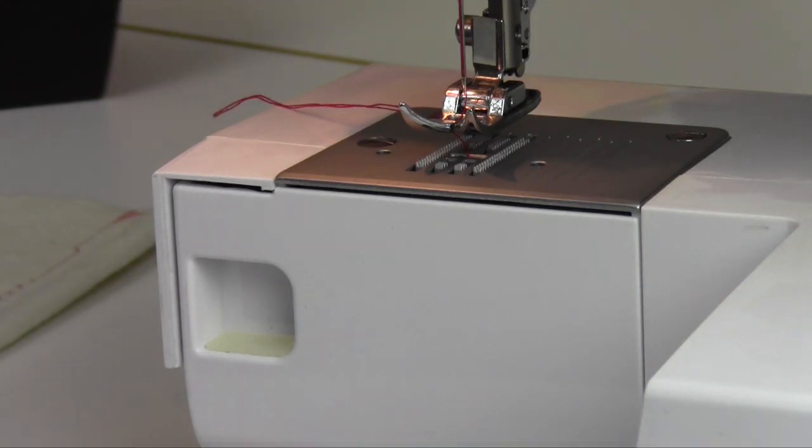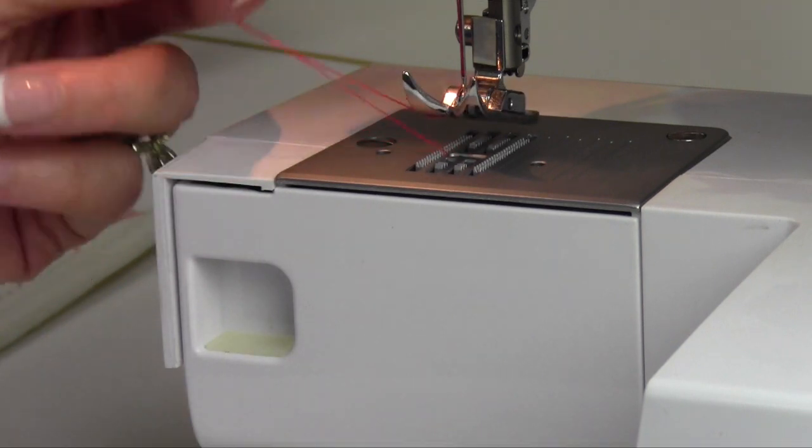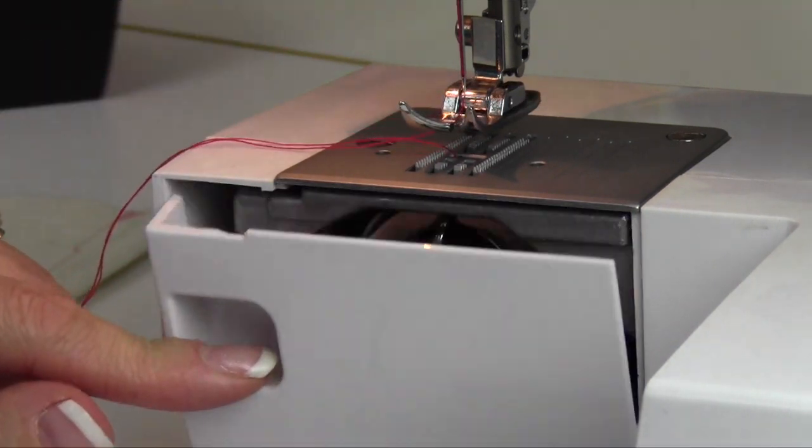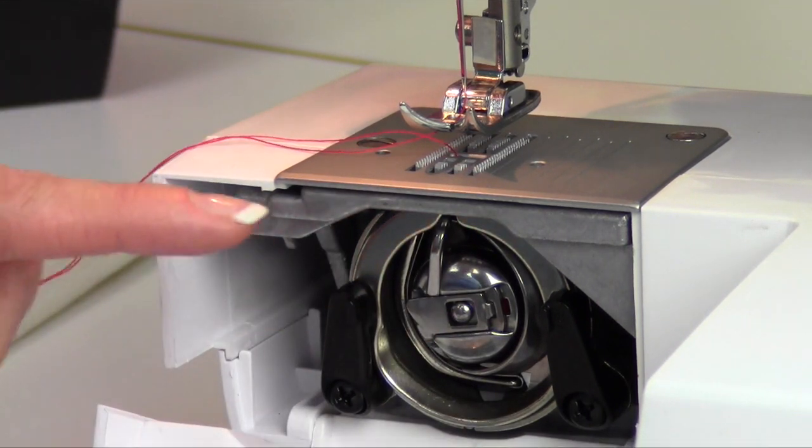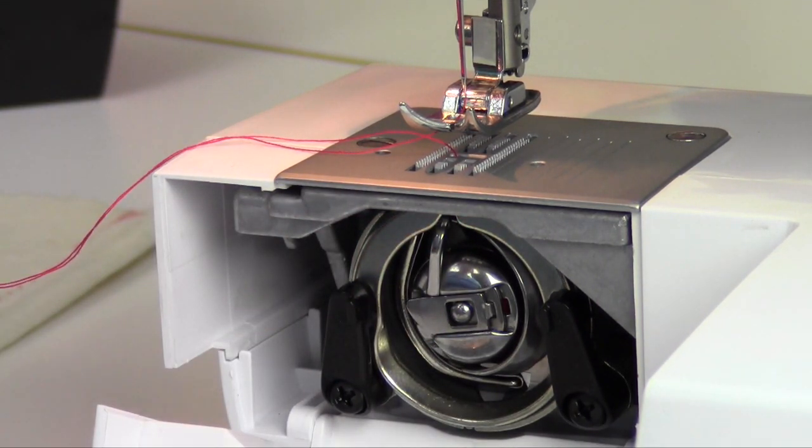Cleaning and oiling this machine is important, and most people won't do it enough. We say after every three to five bobbins, clean down below and give your machine a little oil.